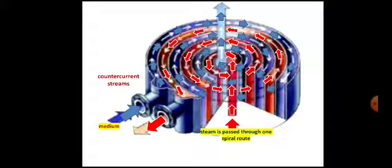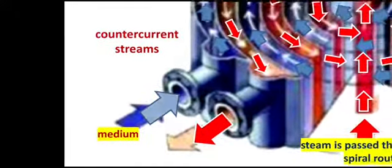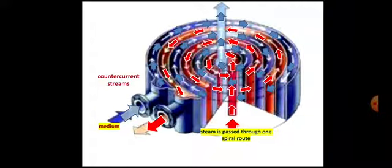There are two counter-current streams: one is the stream of medium shown by blue arrows and another is the stream of steam shown by red arrows. These arrows show the circular path of motion of medium and steam. The medium is fed in from one end and takes a circular path through the coil.